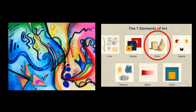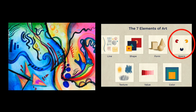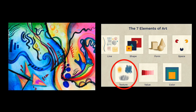Form refers to three-dimensional shapes. Since my artwork is 2D, I didn't use much form except where I shaded some circles to look like they were spheres. For space, I used both negative space — where I have just color — and positive space where I used my different shapes.